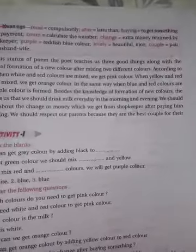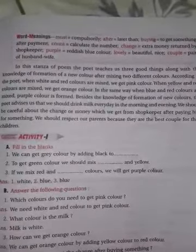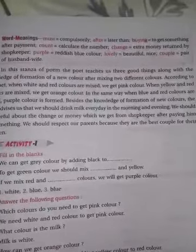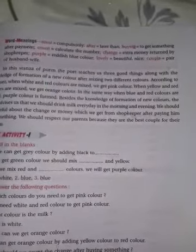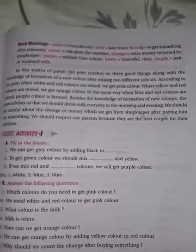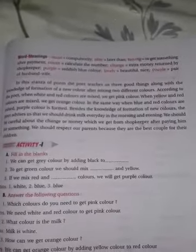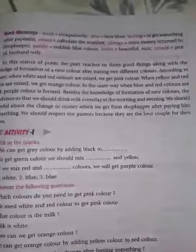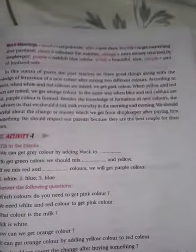In this stanza of the poem, the poet teaches three good things. First: knowledge of formation of a new color after mixing two different colors — इसमें हमें बताया गया है कि दो colors को mix करके एक नया color बनता है। According to the poet, when white and red are mixed we get pink; when yellow and red are mixed we get orange; and when blue and red are mixed we get purple.